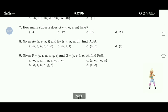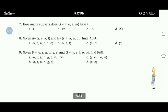Number 7: How many subsets does set G having elements T, E, A, M have? The correct answer for this is Letter C. It has 16 subsets.